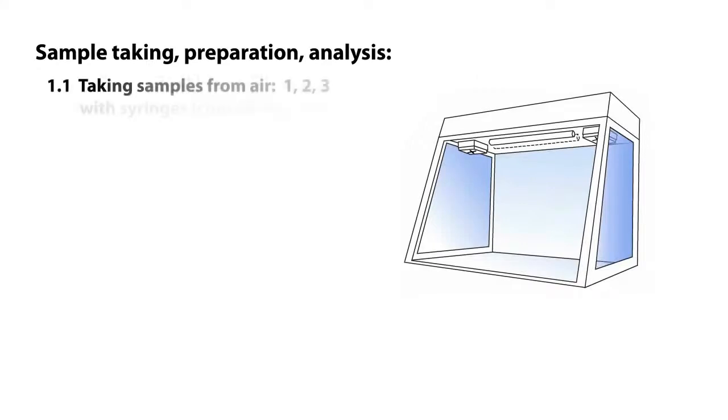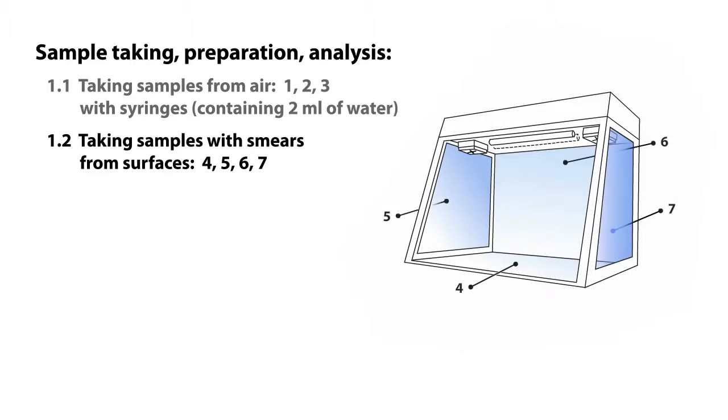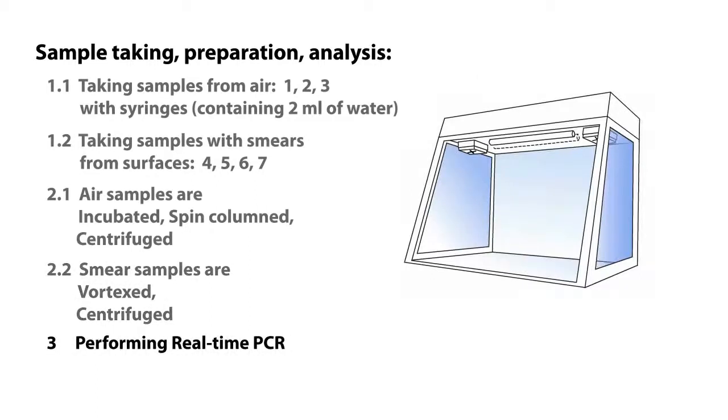How do we take samples? Three samples are taken from air with syringes. Four samples are taken from surfaces with smears. For taking samples we have outlined smear-taking puffs. After taking the samples, the smear is put inside a tube. Samples are prepared in following ways: syringes are incubated, spin-columned, and centrifuged. Smears are vortexed and centrifuged. Finally we are performing real-time PCR.